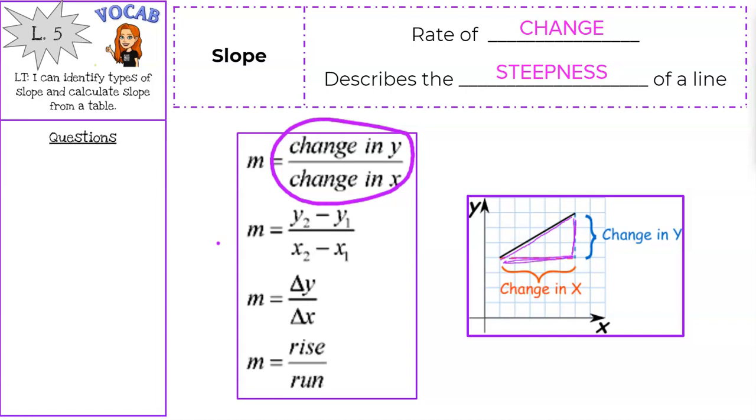Kind makes a little triangle. So then that leads us into this rise over run. Rise is how much do you go up or down? Run, how much do you go left or right? And that gives us our slope.